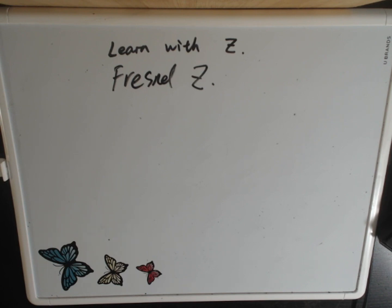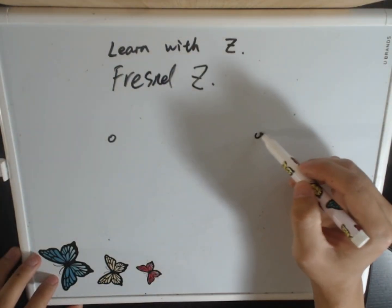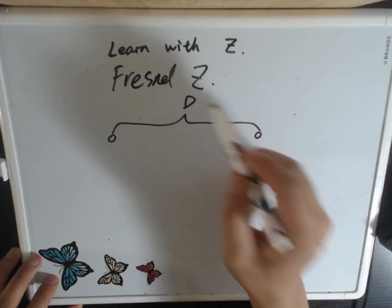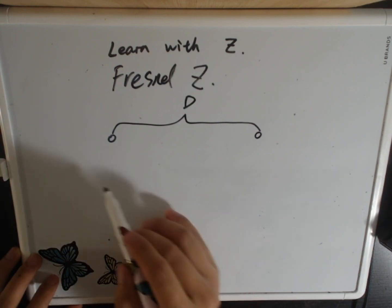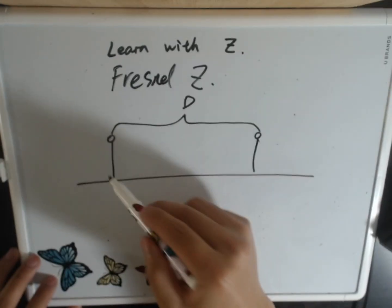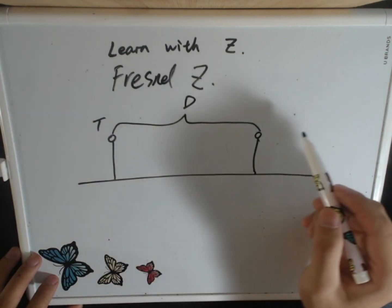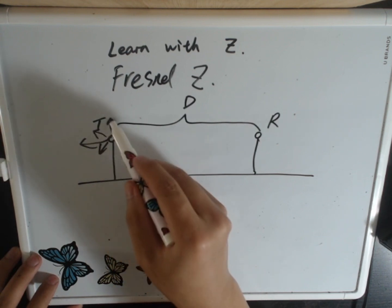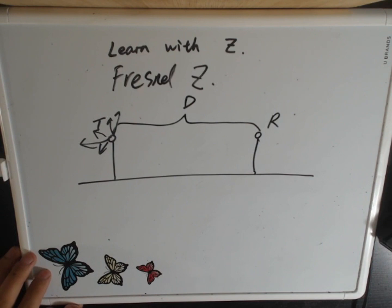You can call it Fresnel zone or whatever. What is the Fresnel zone? Consider you have a transceiver - transmitter and receiver. If they have a fixed distance called D and they have a height, if this is transmitter and this is receiver, the transmitter will have a lot of paths.